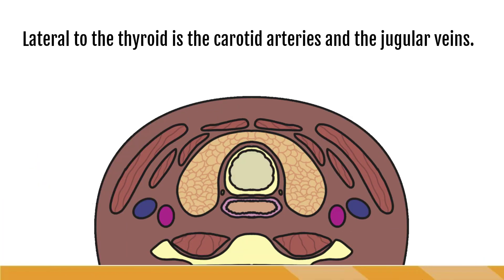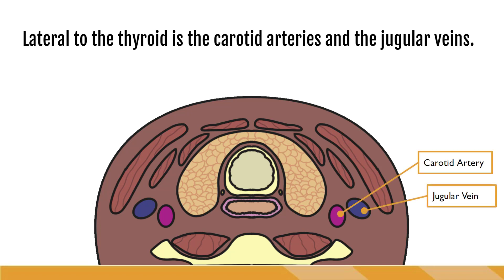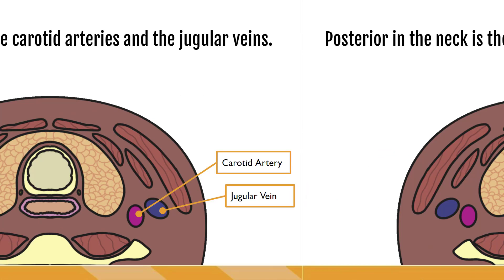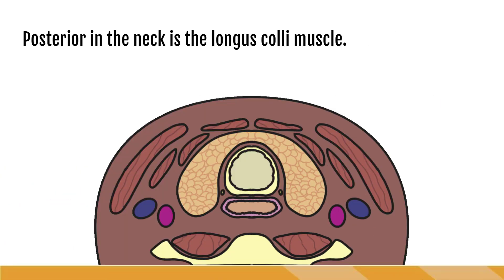Lateral and slightly posterior to the thyroid are the major vessels of the neck: the carotid artery and jugular vein. The vagus nerve also traverses in this area. Posterior to the thyroid is the longus colli muscle, which sits next to the spinal vertebrae. It can be seen on both sides of the neck and actually can mimic a mass on ultrasound.